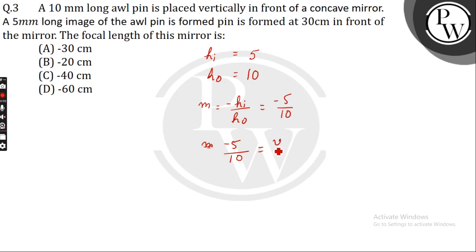What is v here? V equals minus 30 cm. From the equation minus 5 by 10 equals v by u, we get u equals minus 60 cm.